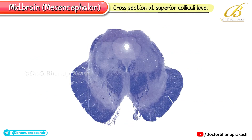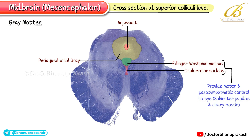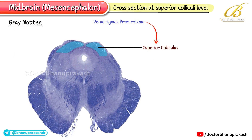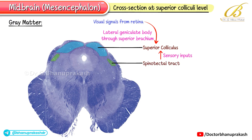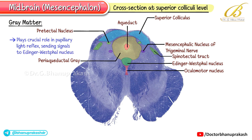Finally, we look at a cross-section at the superior colliculi level. In the gray matter: the periaqueductal gray now contains the oculomotor nucleus and the Edinger-Westphal nucleus, providing motor and parasympathetic control to the eye, sphincter pupilae, and ciliary muscle. The mesencephalic nucleus of the trigeminal nerve is still present carrying proprioceptive information. The superior colliculus receives visual signals from the retina via the lateral geniculate body through the superior brachium, as well as sensory inputs like the spinotectal tract; in response, it sends motor signals through the tectospinal and tectobulbar tracts to coordinate head, neck, and eye movements. The pretectal nucleus lies near the superior colliculus and plays a crucial role in the pupillary light reflex, sending signals to the Edinger-Westphal nucleus.